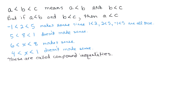We're going to solve compound inequalities. The compound inequality is of this form: A is less than B is less than C. Those could be greater than, both greater than, or a less than and a less than or equal, et cetera. A is less than B is less than C actually means the same thing as A is less than B and B is less than C. And if that's true, then that means A is less than C.